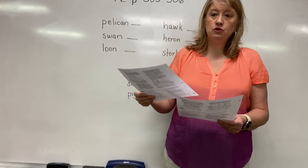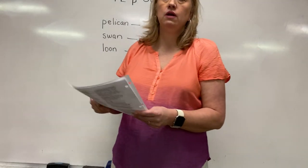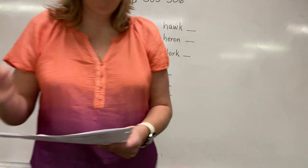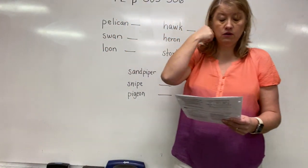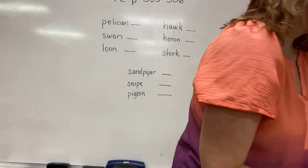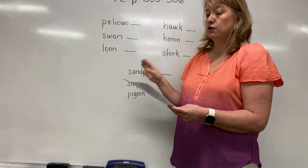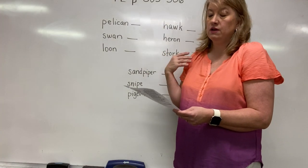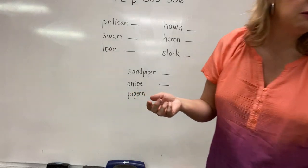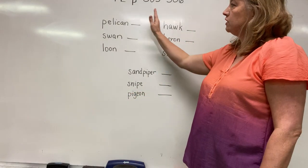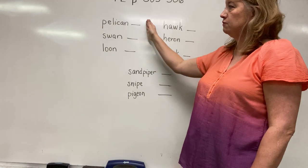Now we are going to review ABC order. Remember, we'll put names of birds in ABC order - birds you might see in Yellowstone National Park, which is what we've been talking about in our worksheets. Let's look at the first set and read them to yourself.